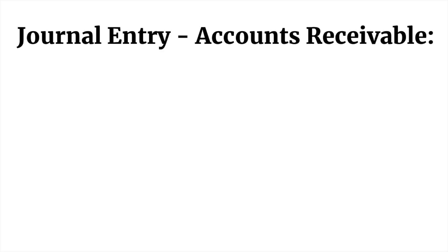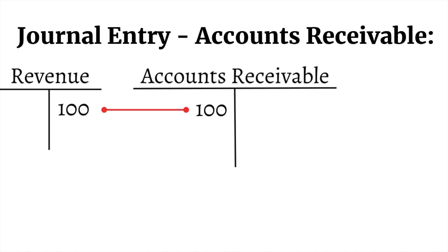The last thing we'll look at is the journal entries for both Accounts Receivable and Accounts Payable. For Accounts Receivable, we debit Accounts Receivable and credit Revenue. We debit Accounts Receivable because it's a current asset, and we credit Revenue because we have revenue coming in. Even though the cash hasn't come in yet, we have still earned it — we supplied the goods and services, so we still record it as revenue.